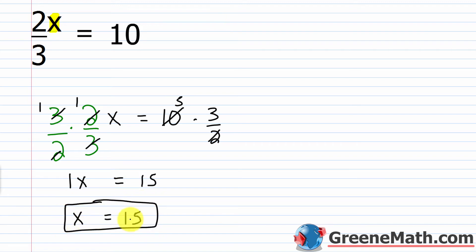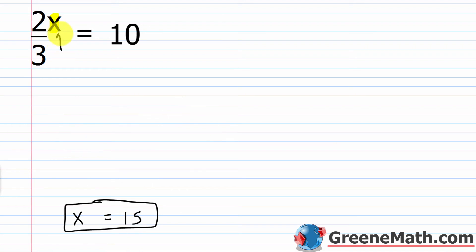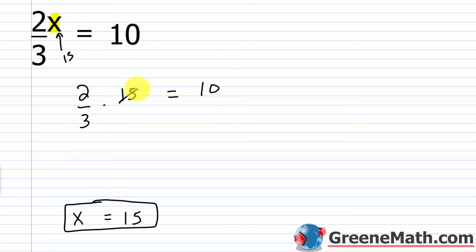Let's check x equals 15. Plugging 15 in: 2 thirds times 15 equals 10. The 15 and 3 cancel to give 5, and 5 times 2 is 10. So 10 equals 10 — x equals 15 is correct.